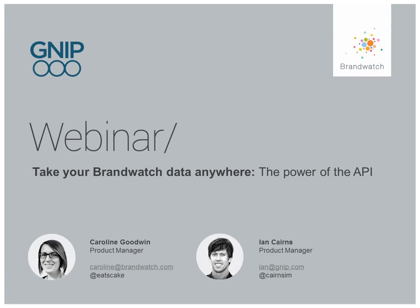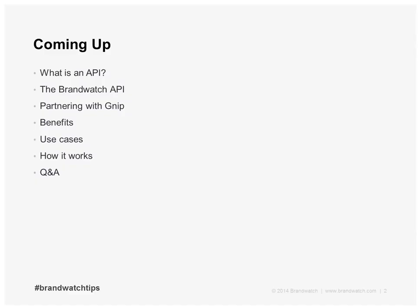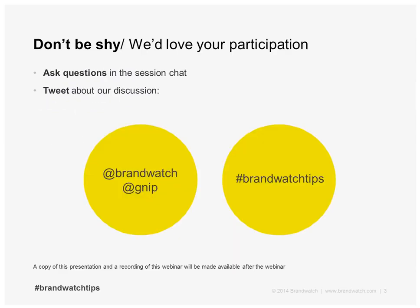We're also joined today by Ian Cairns at Gnip, also a product manager. Gnip is the world's largest provider of social data, and we work with Brandwatch to make data available from Twitter. Coming up today, we've just launched our new API in our partnership with Gnip. We're going to talk about what an API is, the Brandwatch API itself, the partnership with Gnip, the benefits, use cases, and some technical details of how it actually works.